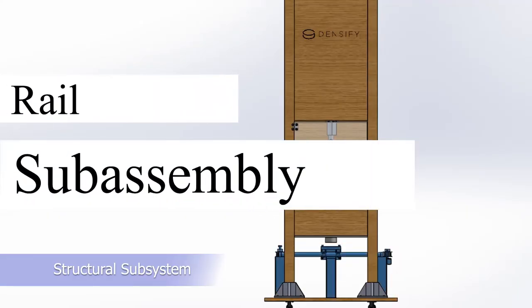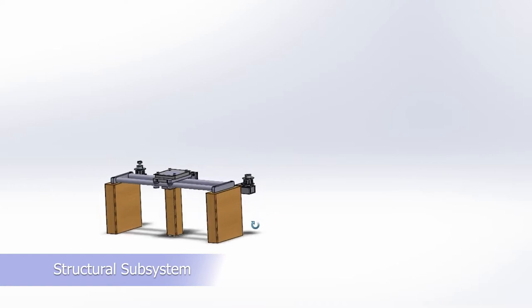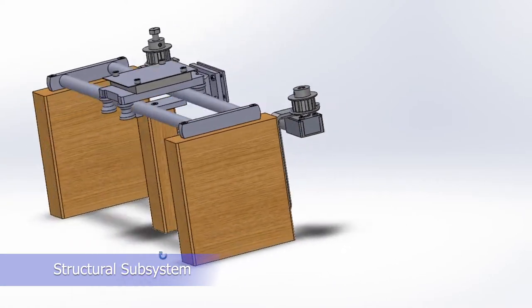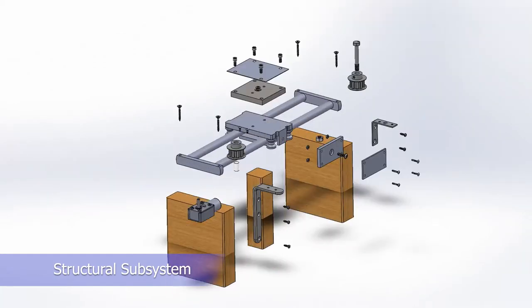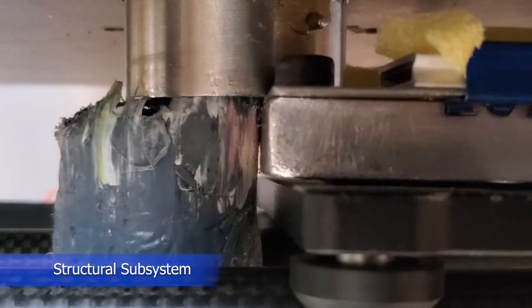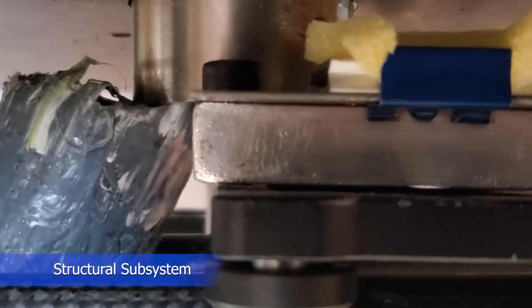The rail sub-assembly is responsible for additional heating to the plastic and automated extraction of the densified product. It features an aluminum end plate that's controlled by a timing belt system, driven by a high-torque DC motor we call the rail motor. The appliance's software automatically moves the end plate after densification, so the end product can be removed by the piston and safely collected by the user.